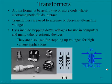Transformers, and again, here's another schematic symbol down here for a transformer. A transformer is basically two or more coils whose electromagnetic fields interact. And so here's one coil, and here is the other coil. Transformers are used to increase or decrease alternating voltages.